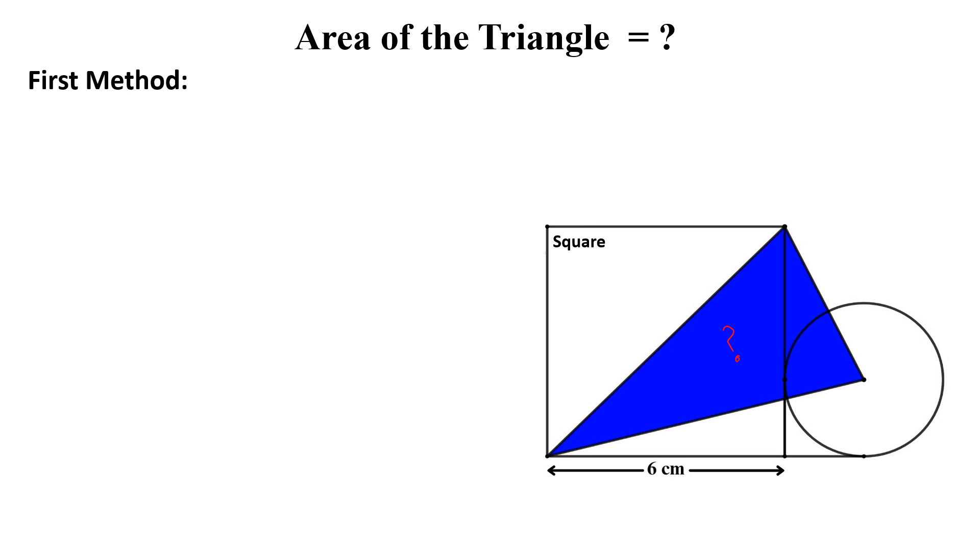In first method, first we draw this radius, like this is the radius of this circle, then extend this radius. This length will be 6 minus r, because the side of the square is 6 cm and this will be also equal to the radius of this circle.